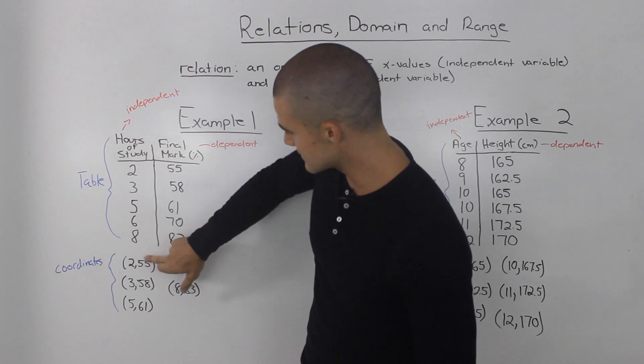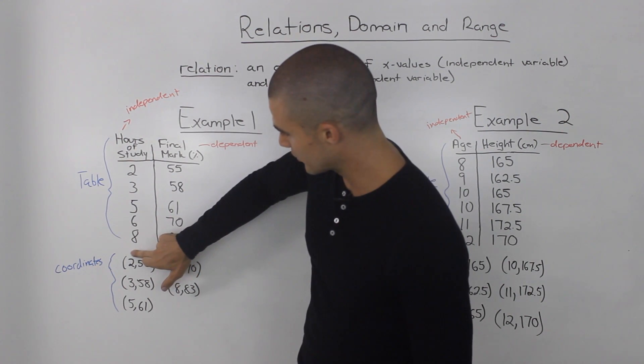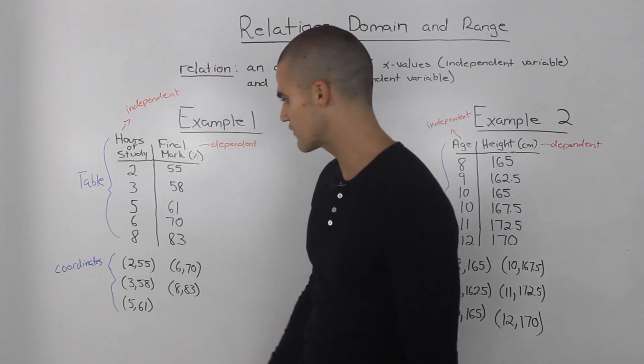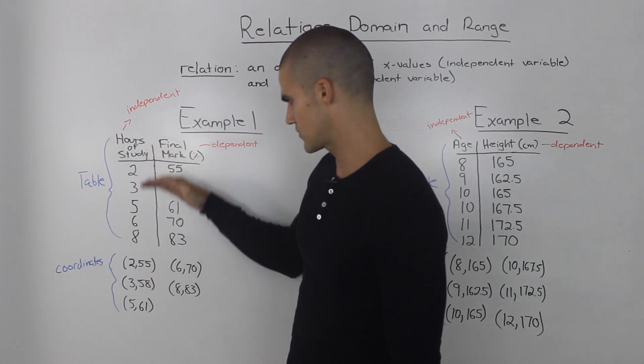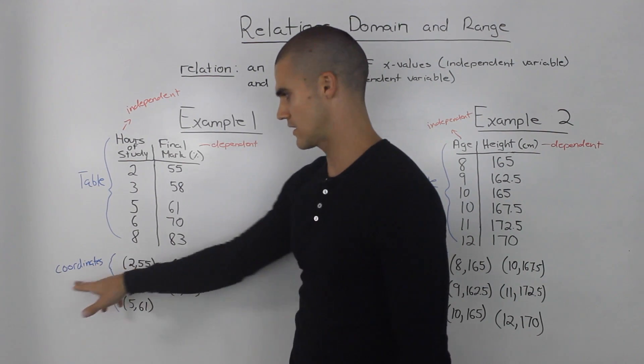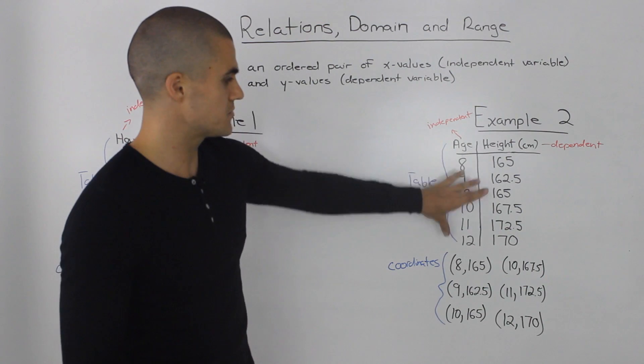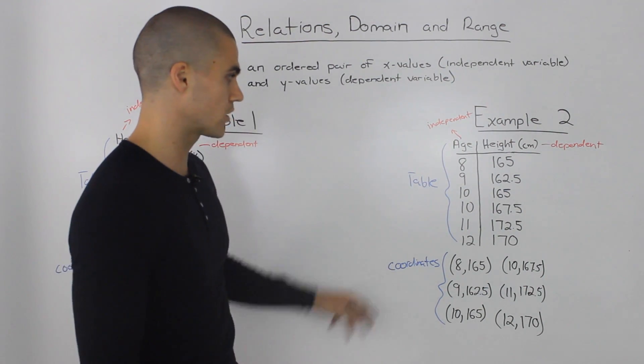We can put that as a coordinate, right? The independent variable comes first of 2 and the dependent variable comes second of 55. Then we did that with the rest of the students. We took all of these points and put them in coordinate form. Same thing here—we took these points and put them in coordinate form.